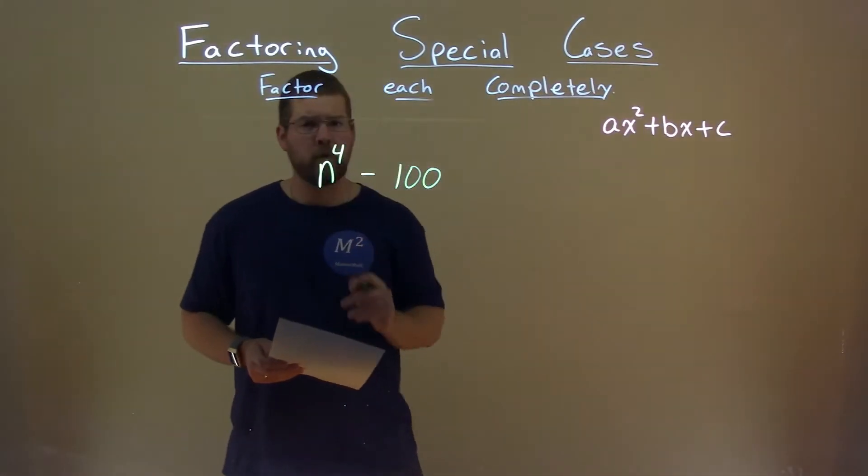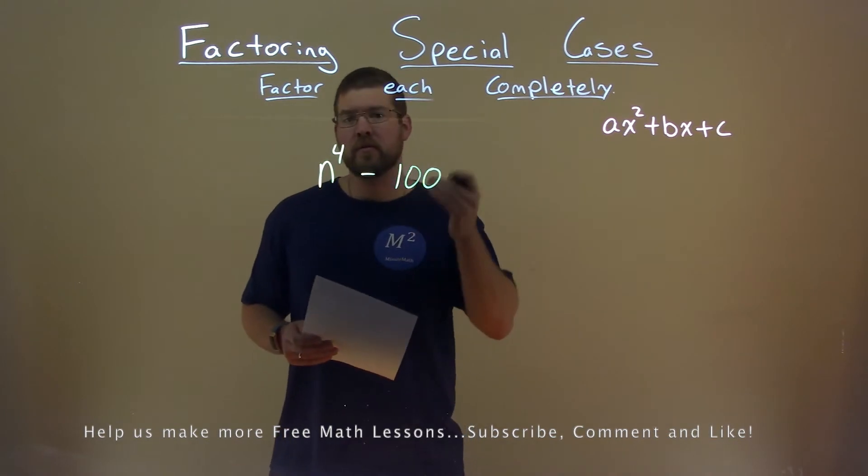We're given this problem right here, n to the fourth power minus 100, and we want to factor this completely.